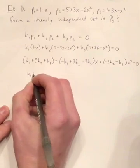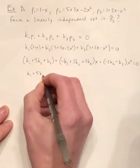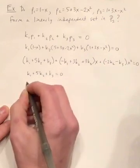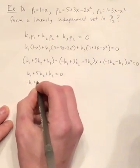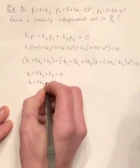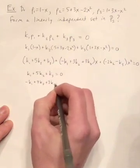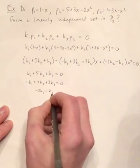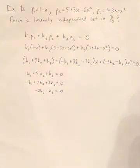In other words, I get the linear system: K1 plus 5K2 plus K3 equals zero, negative K1 plus 3K2 plus 3K3 equals zero, and negative 2K2 minus K3 equals zero. Now notice this is a homogeneous system.